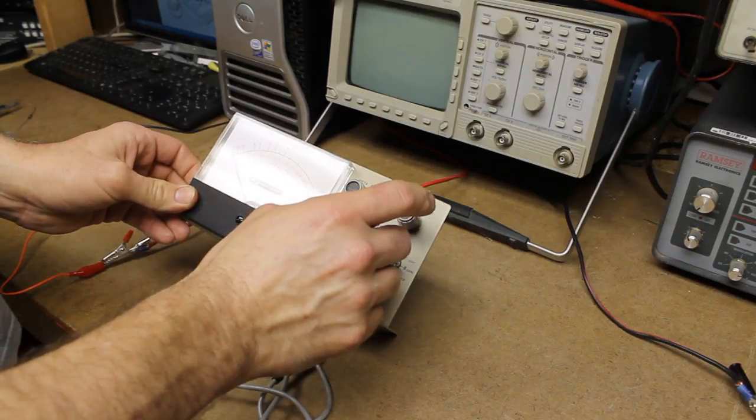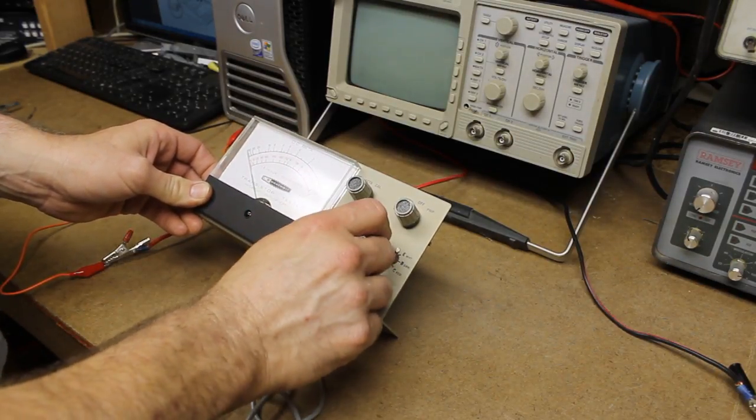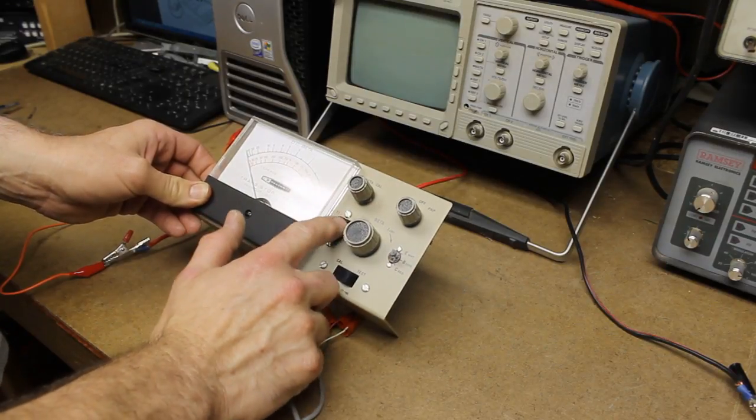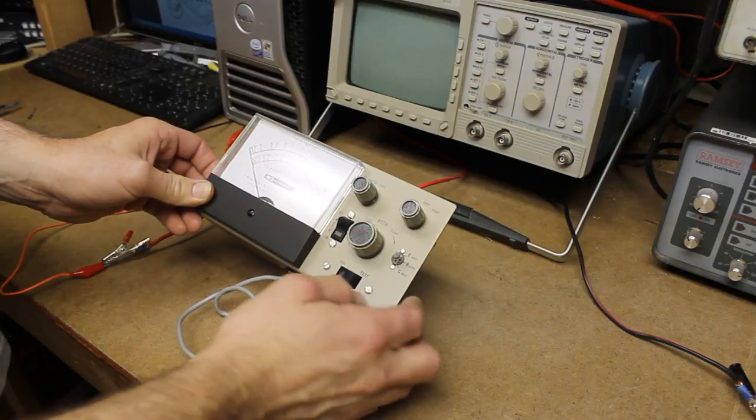Beta calibration, NPN, off, PNP, beta adjustment. Beta times 1, beta times 10. That switch feels okay.